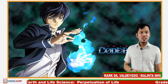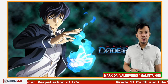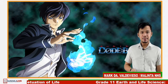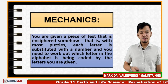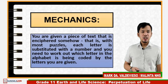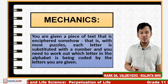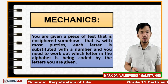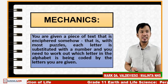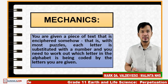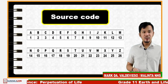Are you familiar with the anime code breaker? Let's try if you are good at it. For our mechanics today, you are given a piece of text that is enciphered. Each letter is substituted with a number and you need to work out which letter in the alphabet is being coded by the numbers you are given. This is your source code — every number corresponds to a letter of the alphabet.